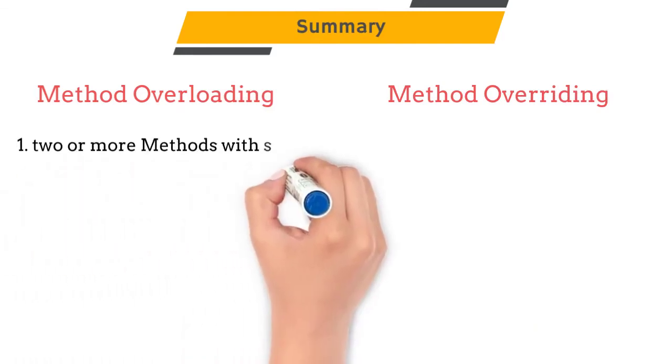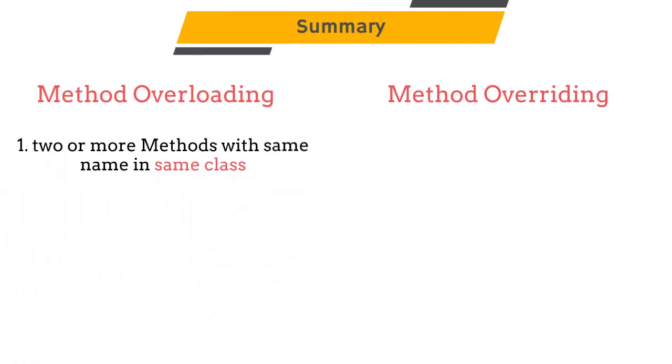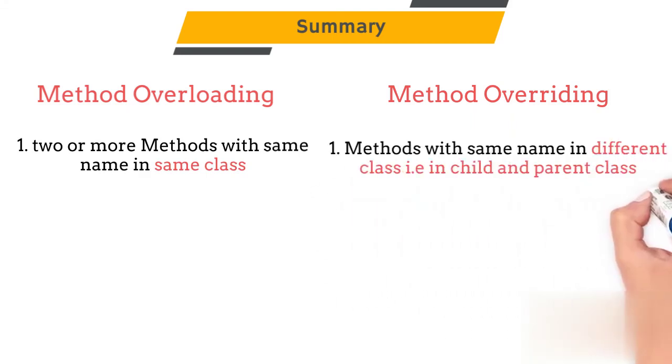Now let's summarize this video. Method overloading means creating two or more methods with the same name in the same class. Method overriding means creating methods with the same name in the parent and child class.